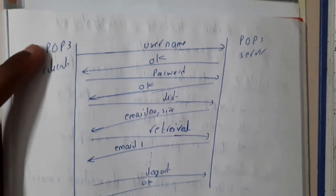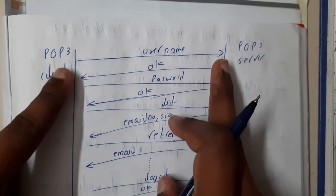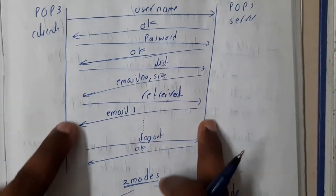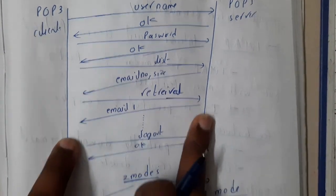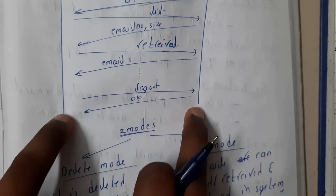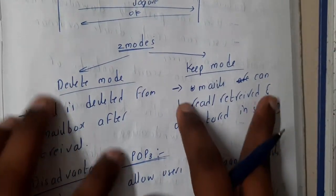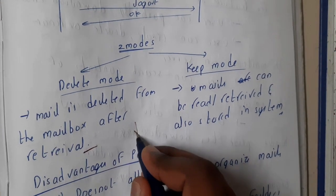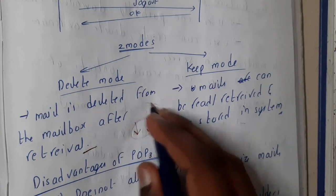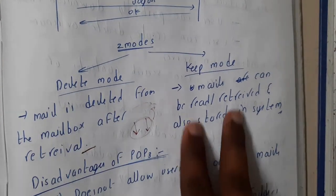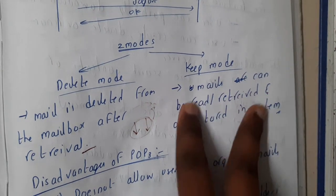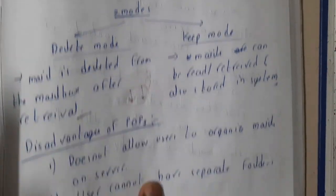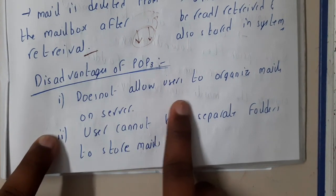In POP3, the client first provides a username and password to the server, then receives a list of all emails with their sizes. Once retrieved, the client logs out. There are two modes: delete mode, where mail is deleted from the mailbox after retrieving, and keep mode, where mail can be read, retrieved, and stored back in the system, but this must be done manually.